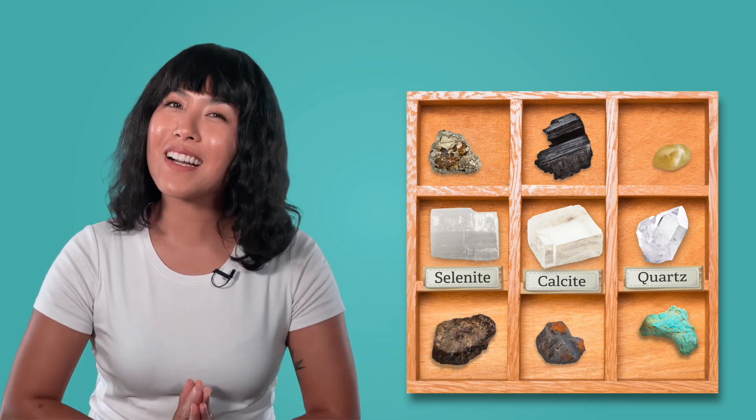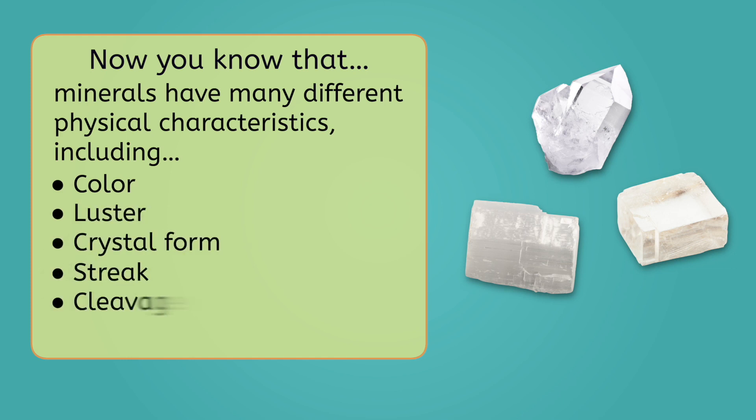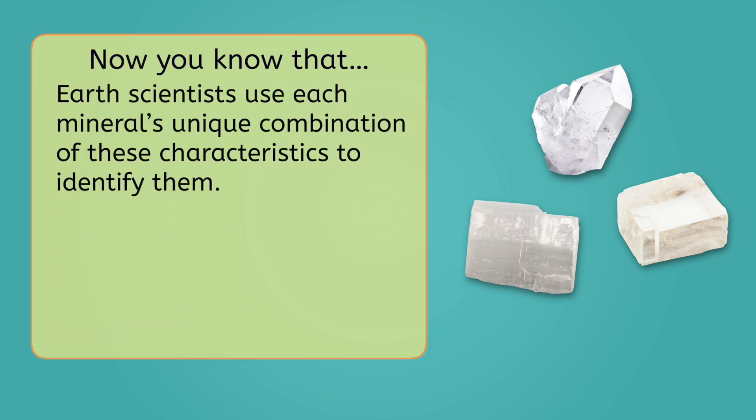I'm glad to have my rock collection back in order. Let's review what we learned along the way. Now you know that minerals have many different physical characteristics, including their color, luster, crystal form, streak, cleavage and fracture, and hardness. And that Earth scientists use each mineral's unique combination of these characteristics to identify them. Be sure to complete the practice questions and extension activities that go with this lesson to try out identifying some minerals on your own. And always remember, in Earth science as in life, you rock! See you next time!